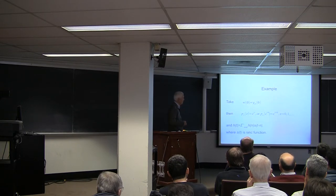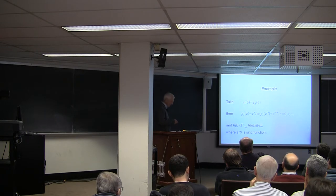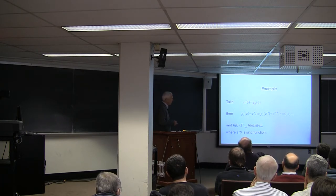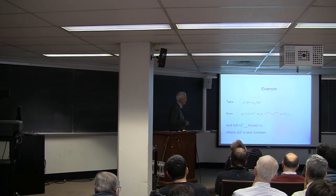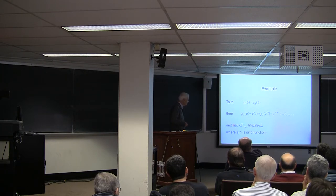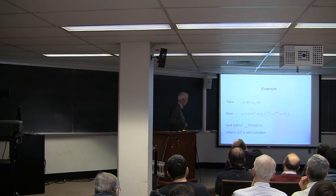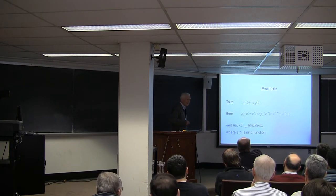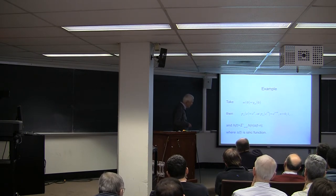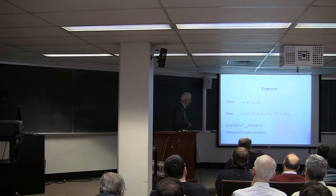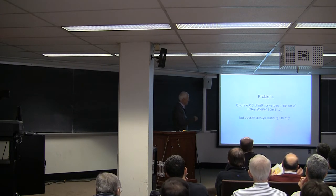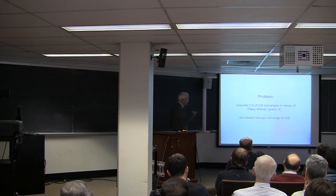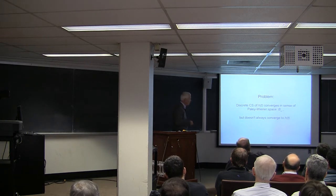As an example, take the weight function as the characteristic function of the interval minus pi to pi. Then the polynomials are just z to the n, or on the real line, e to the i·n·theta. Calculating h of t by that formula gives a result that looks familiar — but it's a sum from n equals 0 to infinity, so it's not the sampling theorem; it's half of the sampling theorem. This only works if h of t is zero on the negative integers.